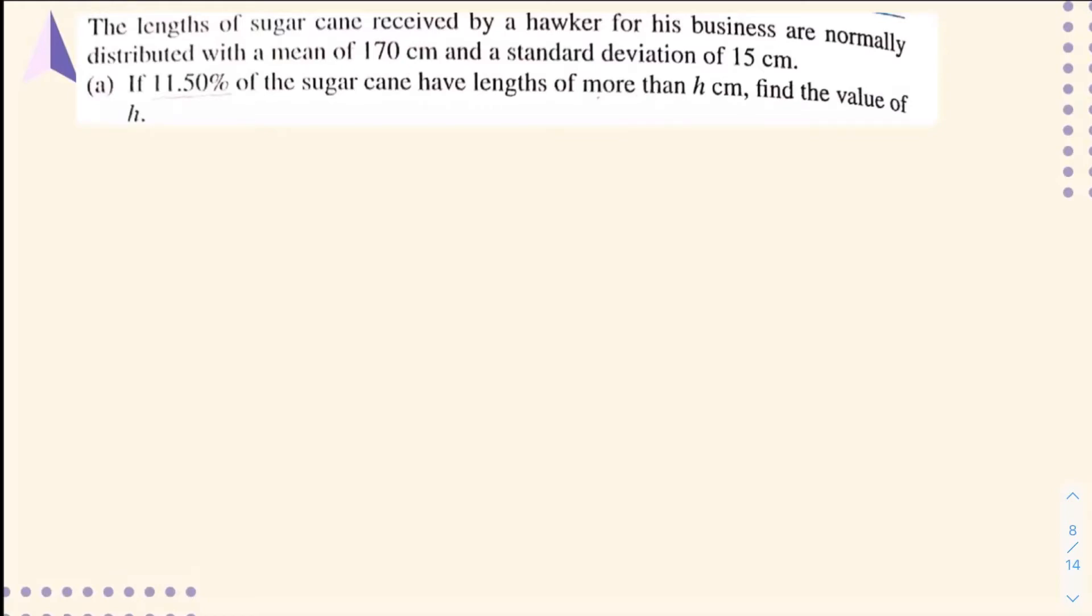In the question, it's given that the length of sugar cane received by a hawker is normally distributed with mean 170 cm and standard deviation of 15 cm. So you can write your random variable x: lengths of sugar cane, with x normally distributed N(170, 15²). Then write down your question statement.